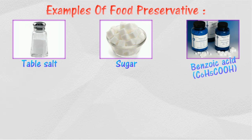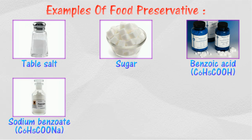Examples of foods that use benzoic acid as a preservative are jams, beer, preserved fruit, pickles, fruit juice, dessert sauces, and syrups. Sodium benzoate is used to preserve fruit juice, chili sauce, and tomato sauce.